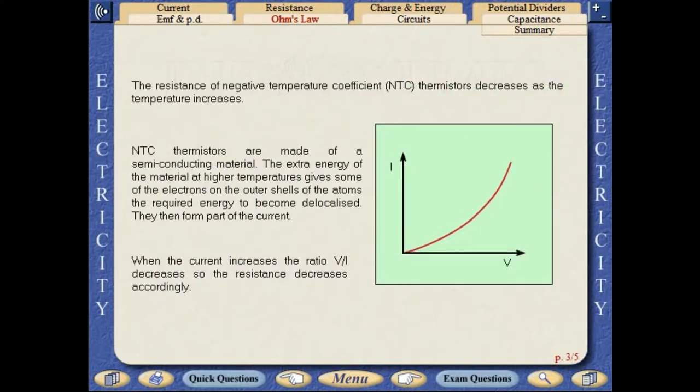The resistance of negative temperature coefficient thermistors decreases as the temperature increases. NTC thermistors are made of a semiconducting material. The extra energy of the material at higher temperatures gives some of the electrons on the outer shells of the atoms the required energy to become delocalized. They then form part of the current. When the current increases, the ratio VI decreases, so the resistance decreases accordingly.